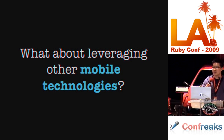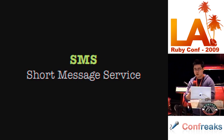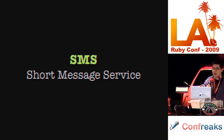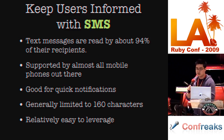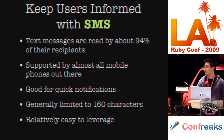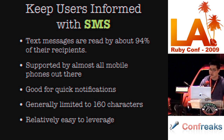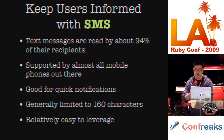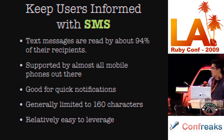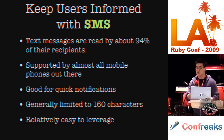So what about leveraging other mobile technologies? First, there's SMS — Short Message Service. How do we keep users informed via SMS? SMS messages are normally read by about 94% of recipients, they're supported by most phones, they're good for quick notifications (generally limited to 160 characters), and they're actually really easy to leverage.